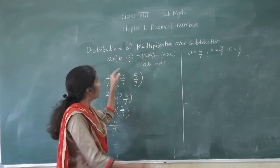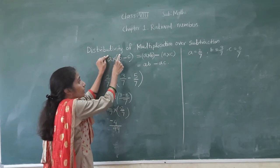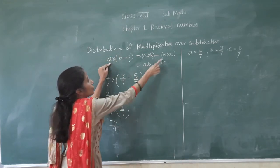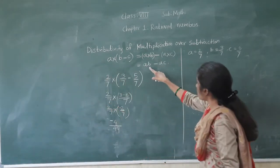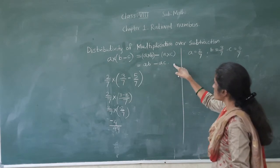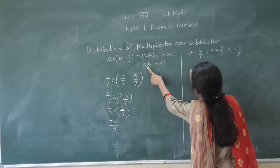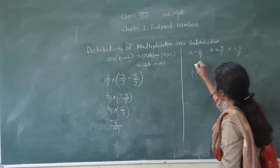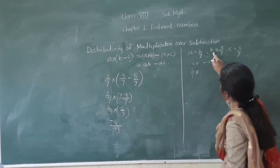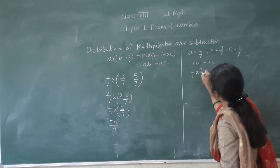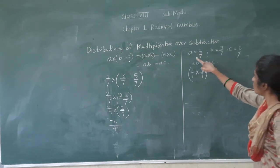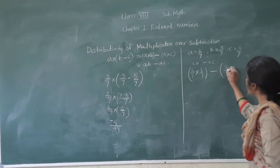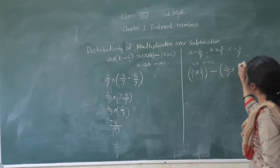Now let's check for AB minus AC. We distribute it as A into B minus A into C. Now what is the value of A? A is equal to 2 upon 7. A multiplied by B — what is the value of B? 3 upon 7. Minus A into C — what is the value of A? 2 upon 7. And what is the value of C? 5 upon 7.